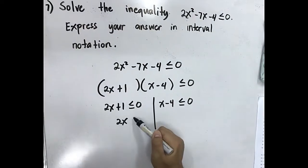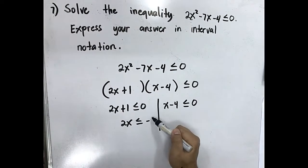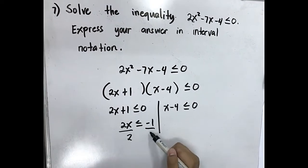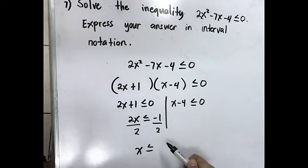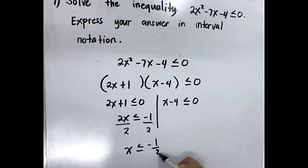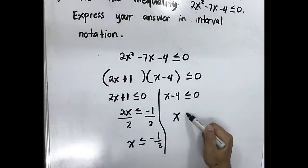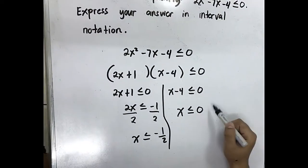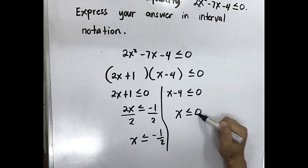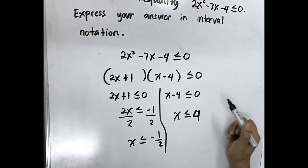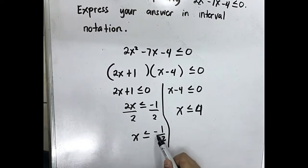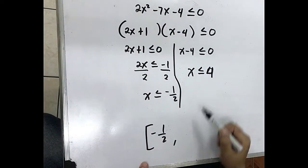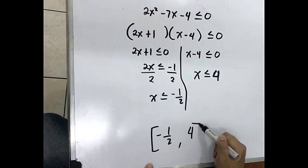Transpose: 2x less than or equal to negative 1, divide by 2, x is less than or equal to negative 1 half. And x minus 4 less than or equal to 0 gives x less than or equal to 4. So our interval notation is: closed bracket negative 1 half to 4 closed bracket.